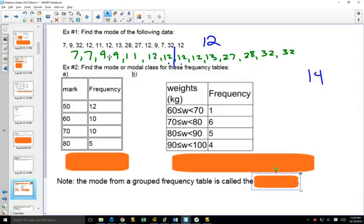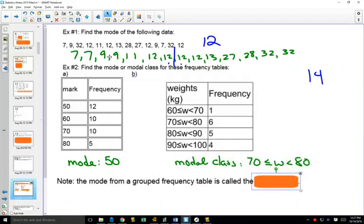So you can also do modes with frequency tables. Which value happens the most? Here, the 50, because it happens 12 times. So remember that the frequency tells how many times something has happened, so we can know that that one happens the most. When you have grouped data, and in this case your data is grouped, 70 to 80 is what happens the most. We call that a modal class, because it's that group of data that happens the most.